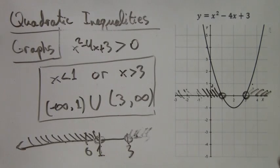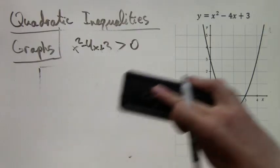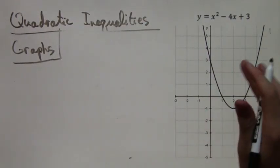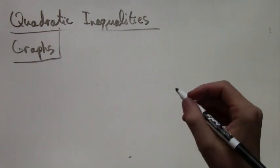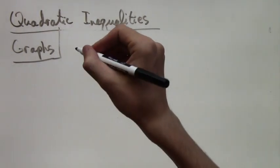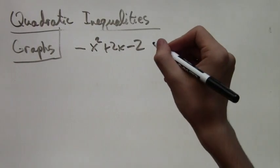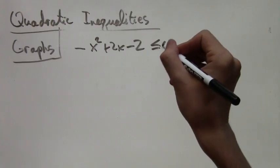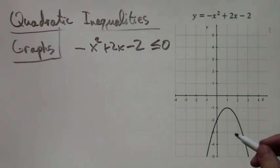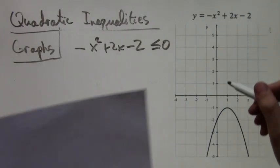So now we're going to move on to our third and last example. Hopefully these are making sense so far. So in this example, we are going to solve the inequality negative x squared plus 2x minus 2 is less than or equal to 0.